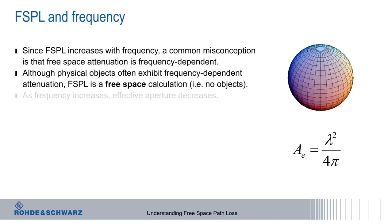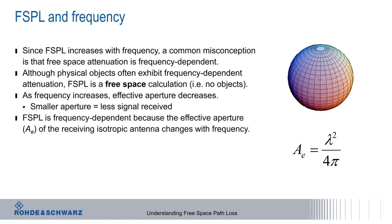That is, as the wavelength decreases, or the frequency increases, the effective aperture decreases. A smaller aperture means less signal received. So, free space path loss is frequency-dependent because the effective aperture of an isotropic radiator changes with frequency.